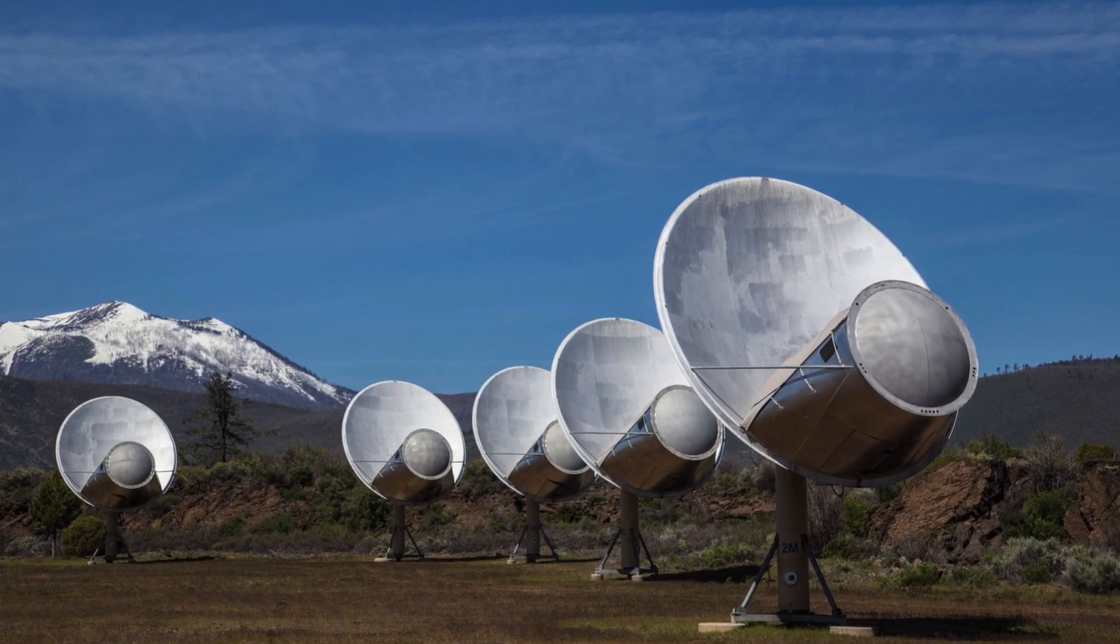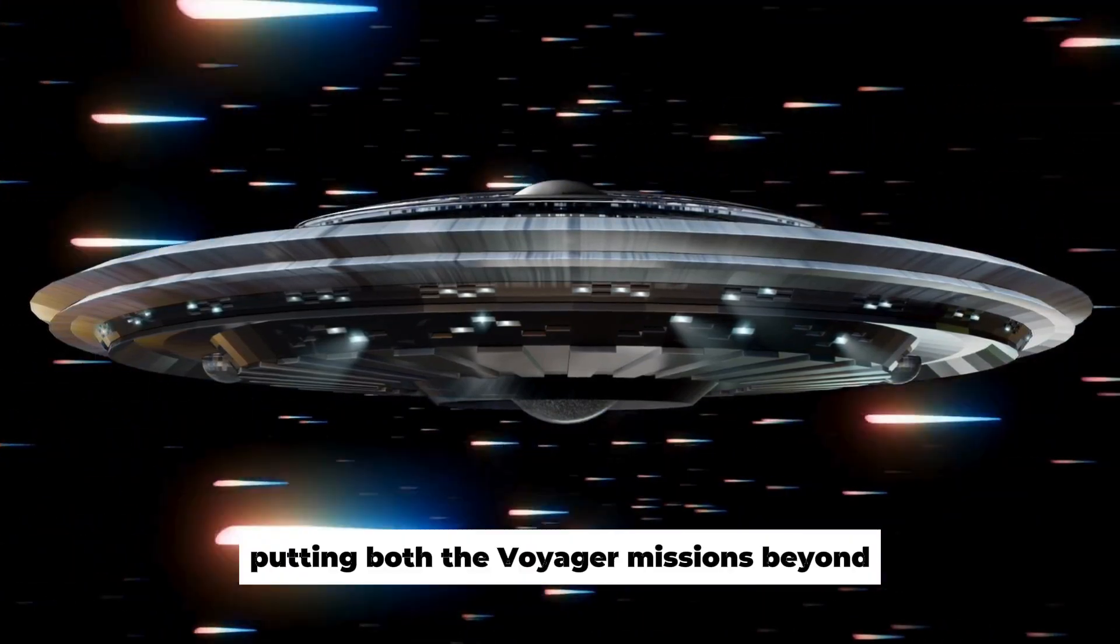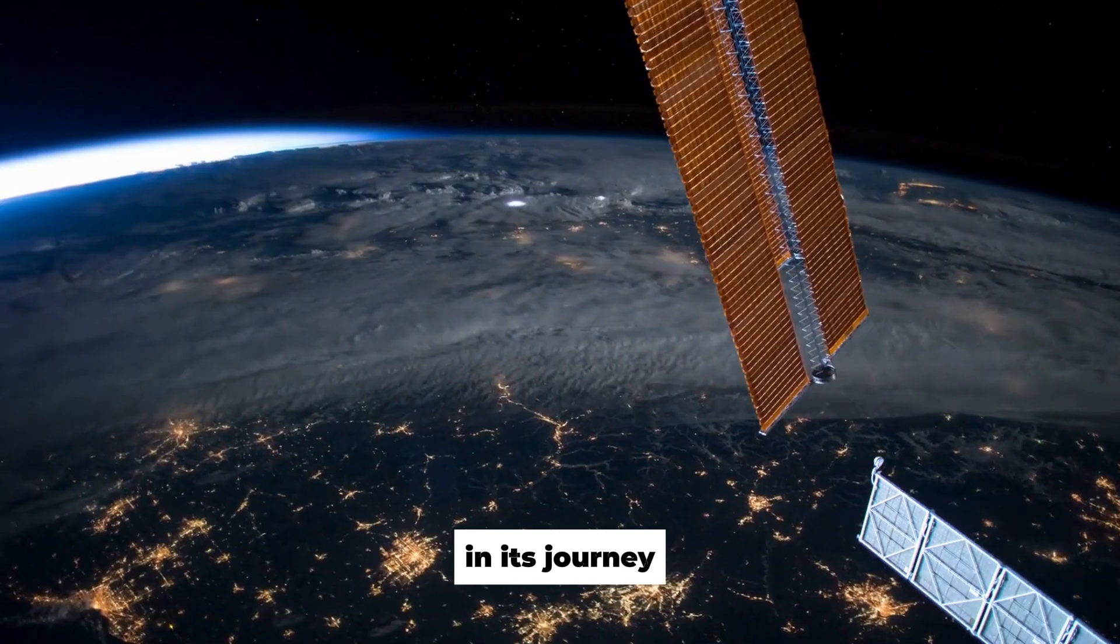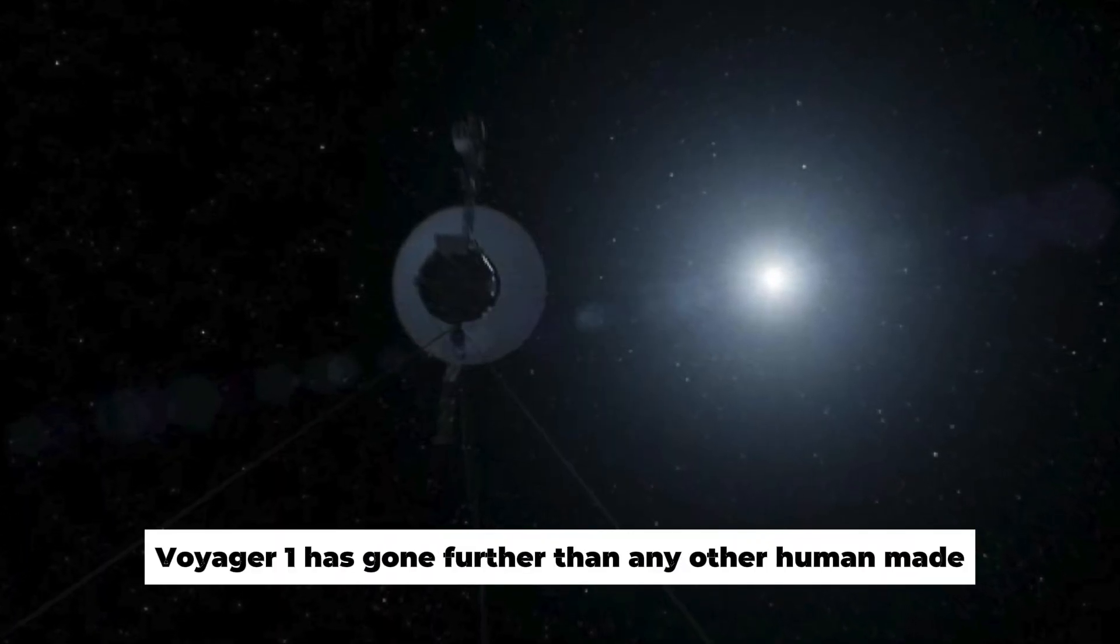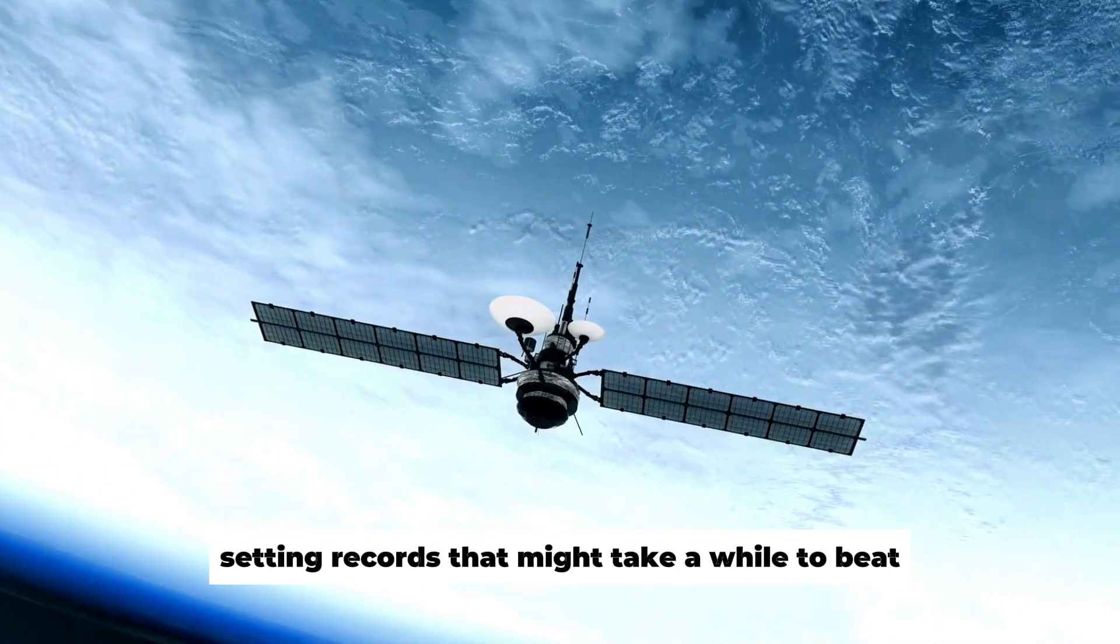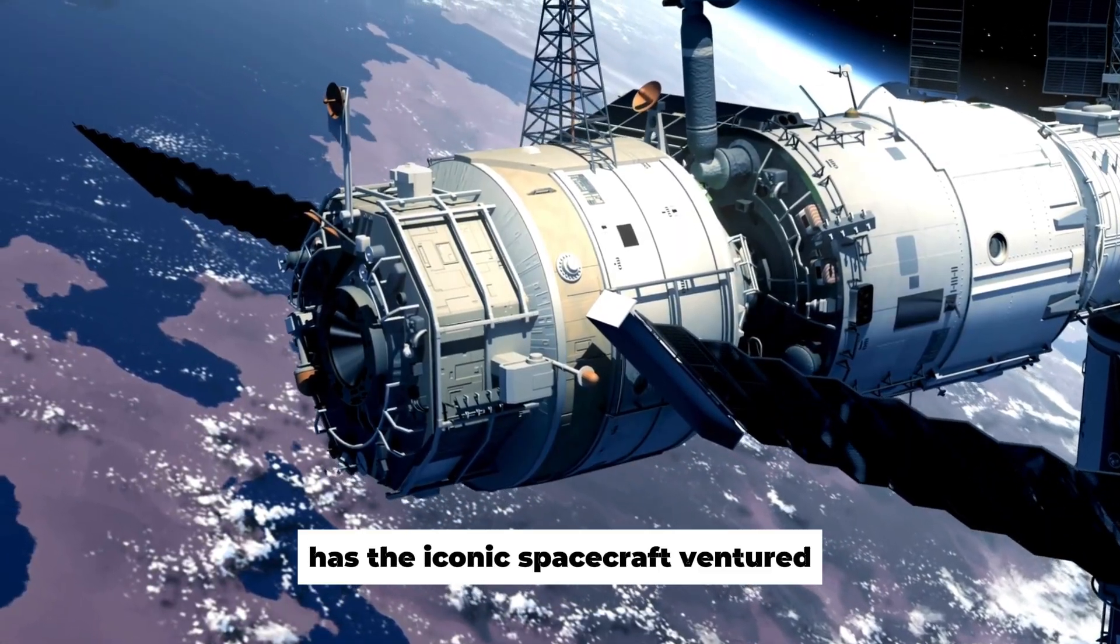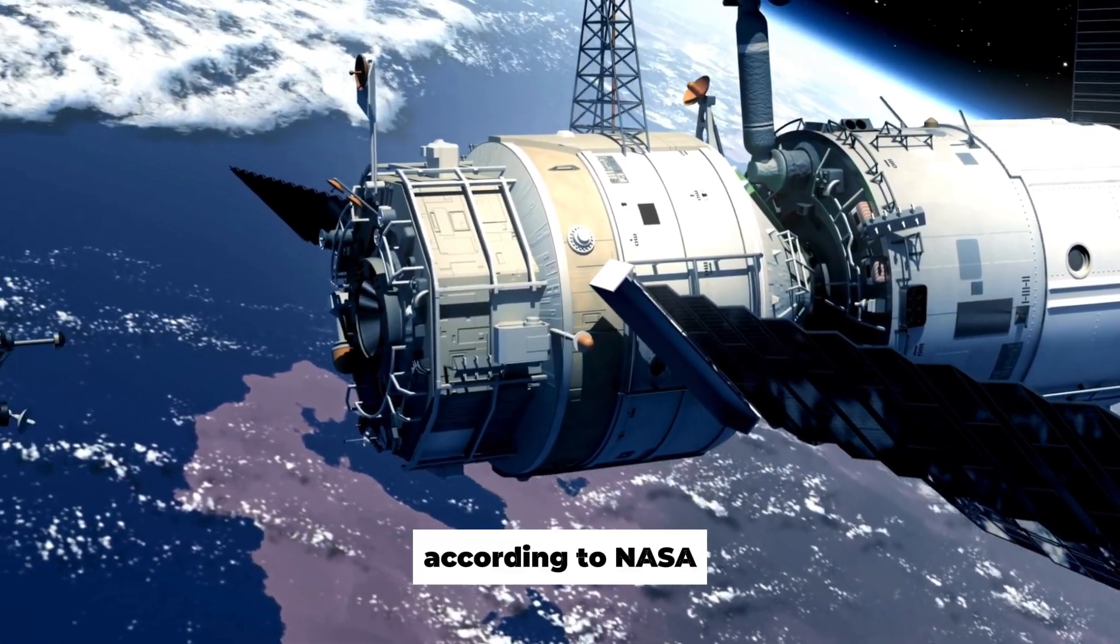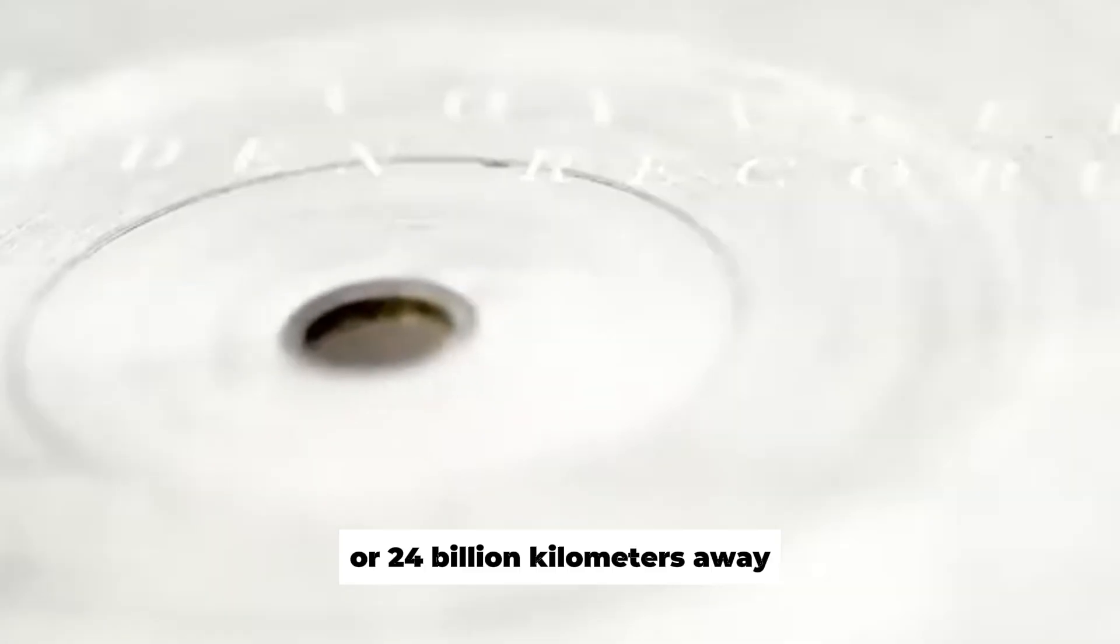Crossed the heliopause into interstellar space on November 5, 2018, putting both the Voyager missions beyond the solar system. In its journey venturing beyond the solar system, Voyager 1 has gone further than any other human-made object in the world, setting records that might take a while to beat. But exactly how far from Earth has the iconic spacecraft ventured? According to NASA, it's now more than 15 billion miles or 24 billion kilometers away.